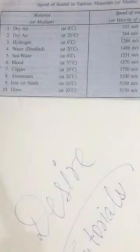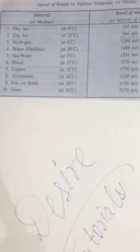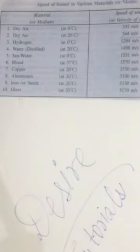Next is speed of sound in various materials. In dry air at 0 degrees Celsius, the speed of sound is 332 meters per second. In dry air at 20 degrees Celsius, it is 344 meters per second. In hydrogen at 0 degrees Celsius, it is 1284 meters per second.